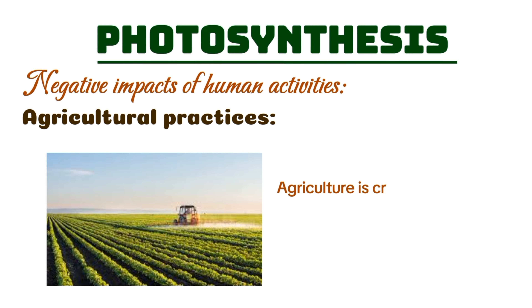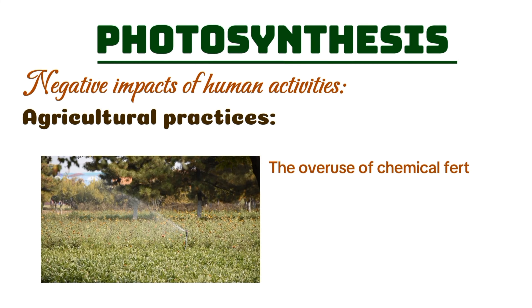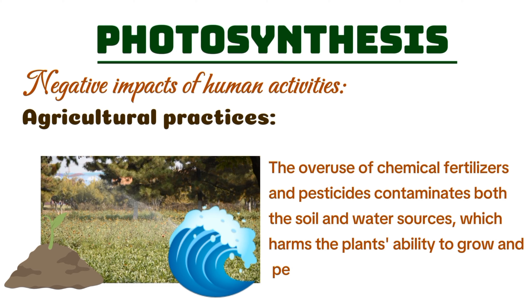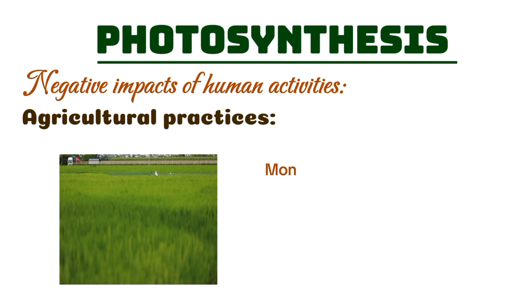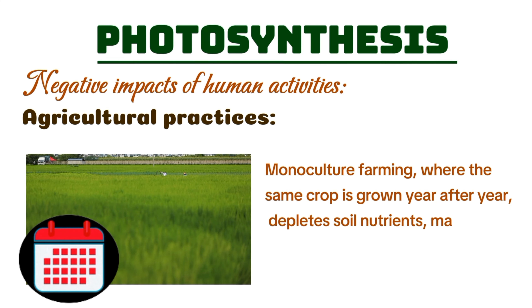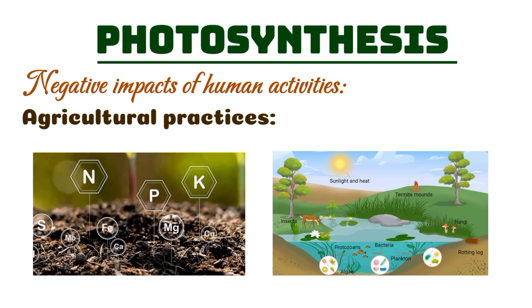While agriculture is crucial for human survival, some modern practices harm the photosynthetic process. The overuse of chemical fertilizers and pesticides contaminates both the soil and water sources, which harms the plant's ability to grow and perform photosynthesis effectively. Monoculture farming, where the same crop is grown year after year, depletes soil nutrients, making it harder for plants to thrive. This lack of biodiversity weakens the ecosystem and makes crops more susceptible to pests and diseases, further limiting photosynthesis.